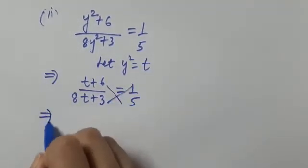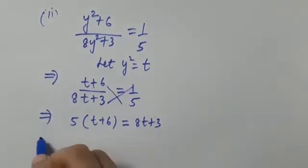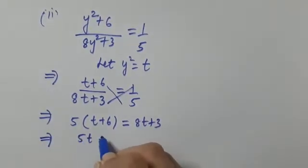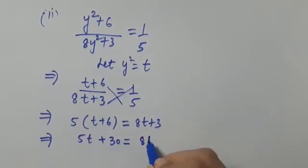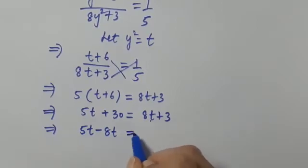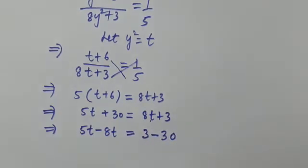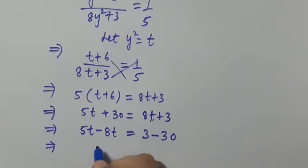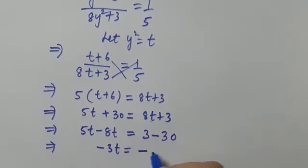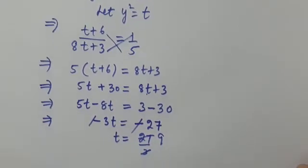Do cross multiplication: 5 × (t + 6) = 8t + 3. This gives 5t + 30 = 8t + 3. Transpose 8t to the left side to get −3t, and transpose 30 to the right side to get −27. So −3t = −27, which means t = 27/3 = 9.